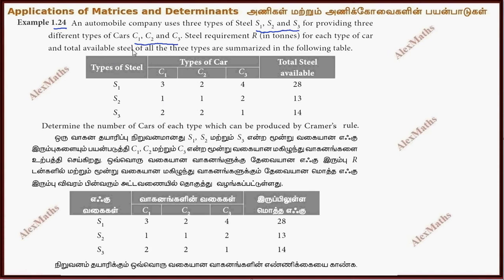Let's look at the total available steel. Let's determine the number of cars of each type of car. So, in the car C1, this is x, this is y, this is z.